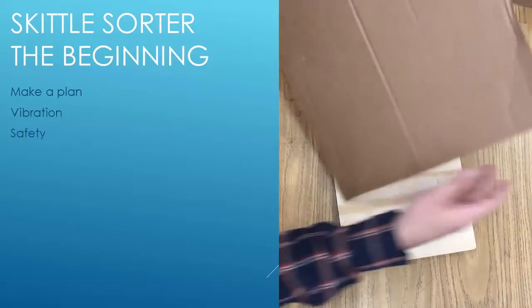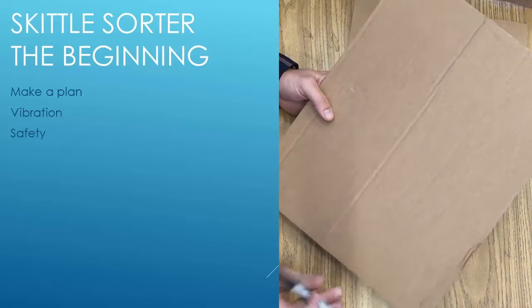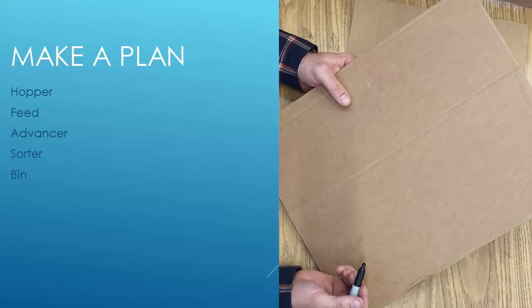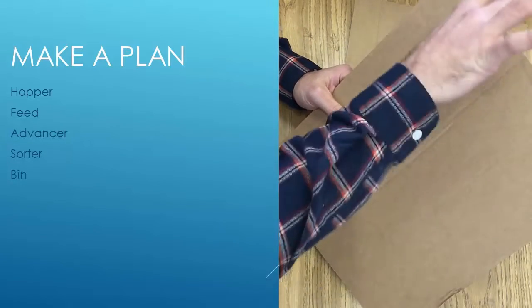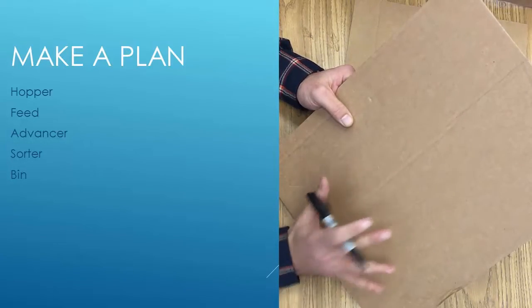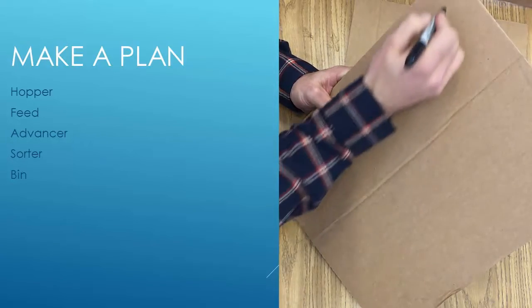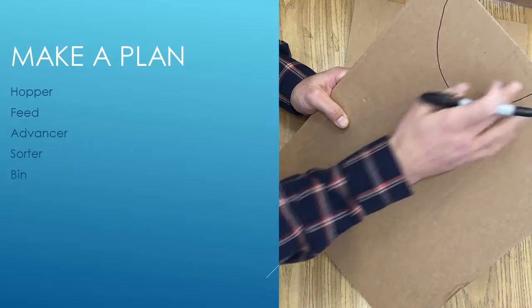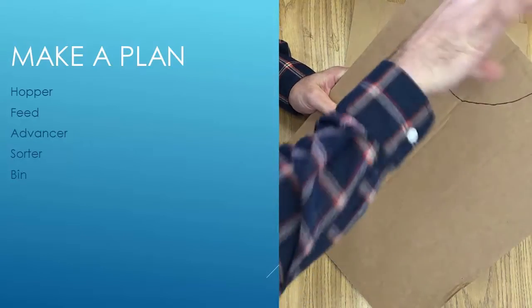When you get started, first thing to do on any project really is to make a plan. So you have a Sharpie, you have some cardboard. Let's draw out what we want to do. We know we're going to be putting a hundred grams of Skittles all at once into your Sorter. So it makes sense for us to build some sort of a hopper. So I'm just going to draw a bowl looking thing here where we can dump them in.